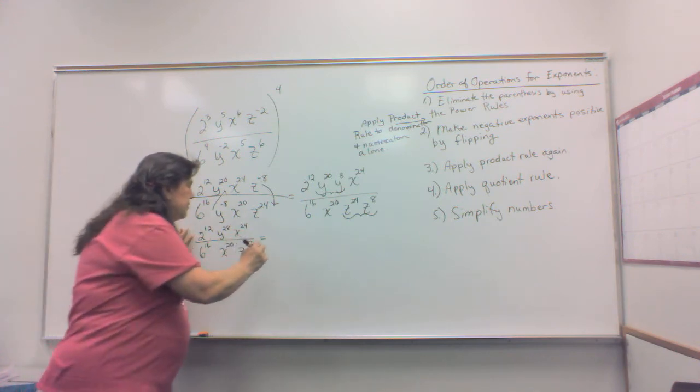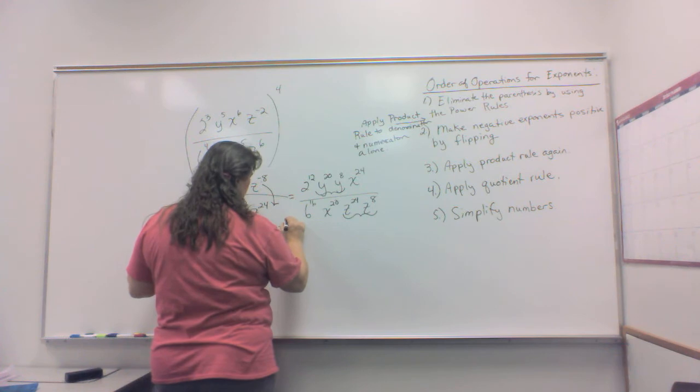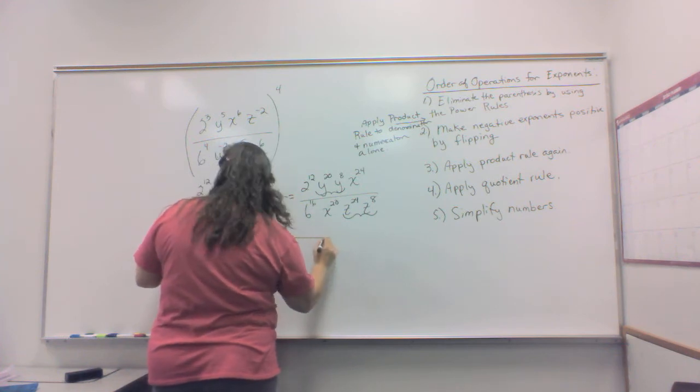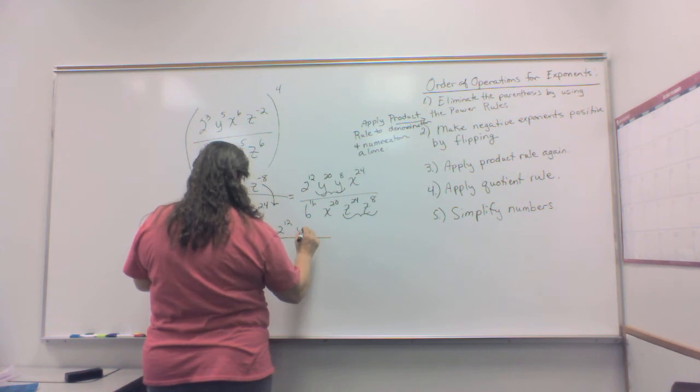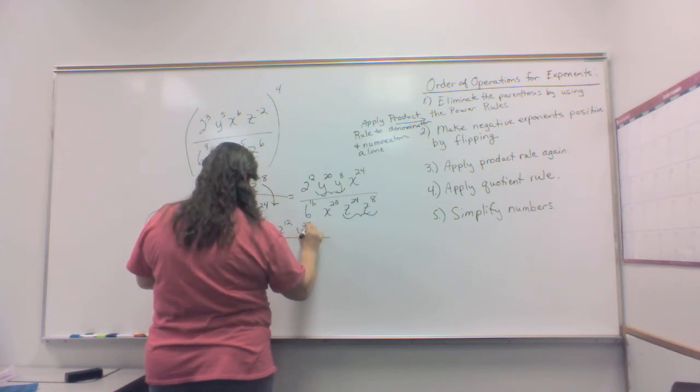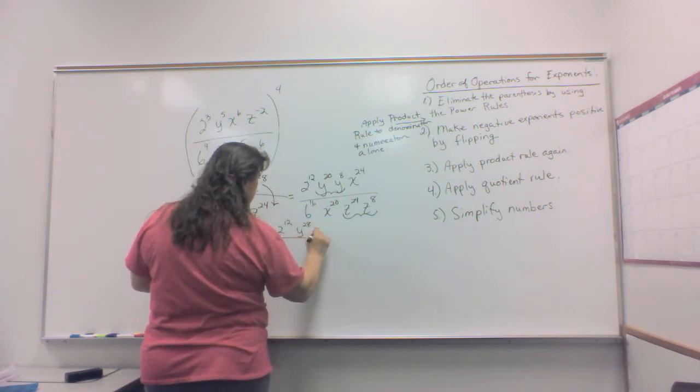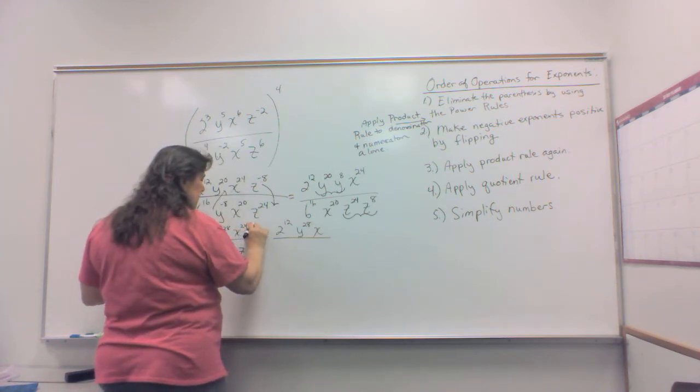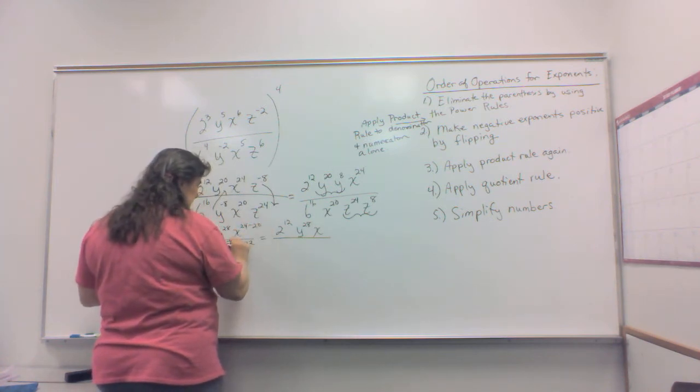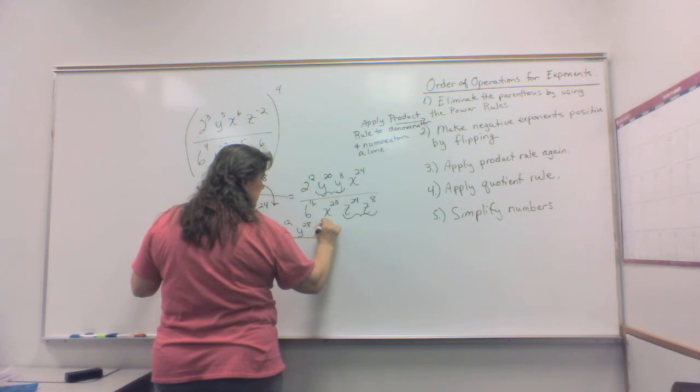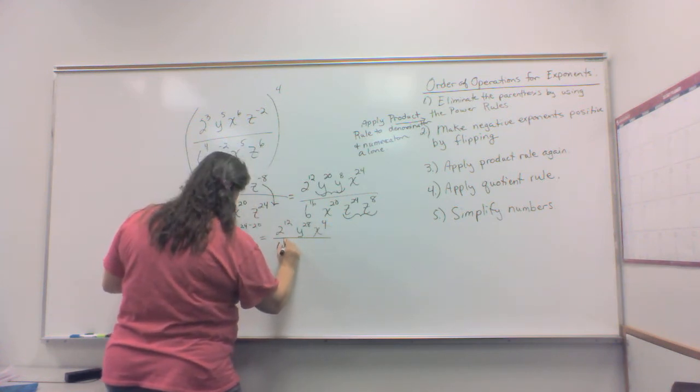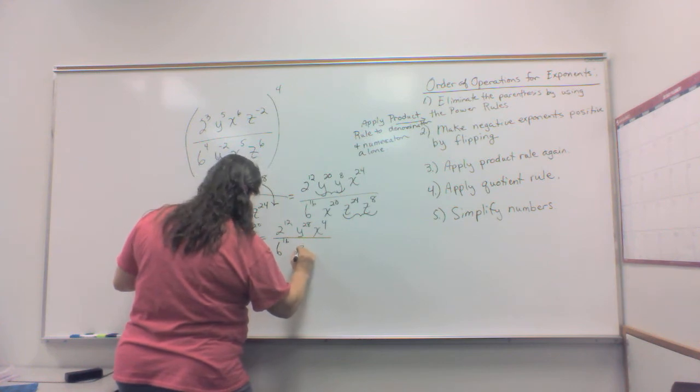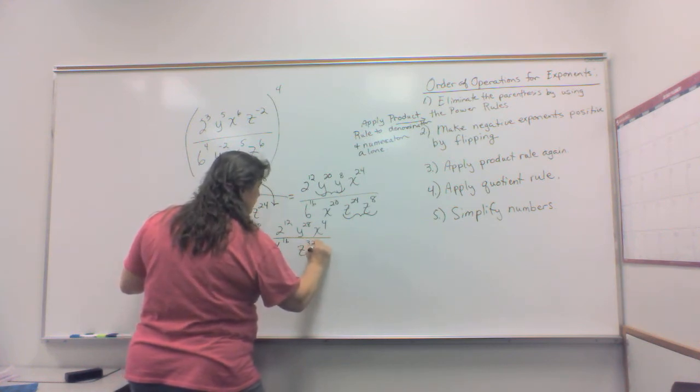I'm going to have two to the 12th over y to the 28th. And then I'm going to have x to the 24th minus 20. See that? That's going to give me x to the 4th. And I have six to the 16th and z to the 32nd.